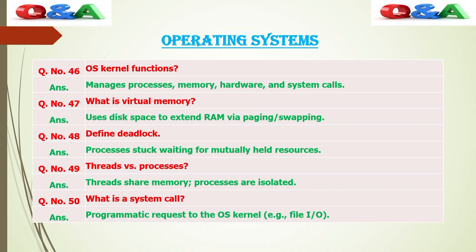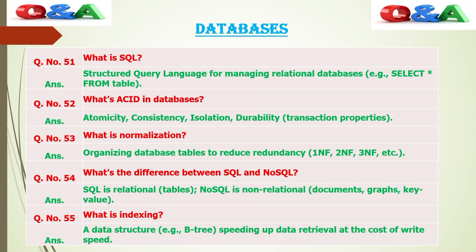Fundamental topics in computer science — definition: fundamental topics in computer science (CS) are the core principles and foundational concepts that form the basis of computing. These include algorithms and data structures (sorting, searching, trees, graphs), computer architecture (CPU, memory, I/O systems), and operating systems (processes, threads, memory management).